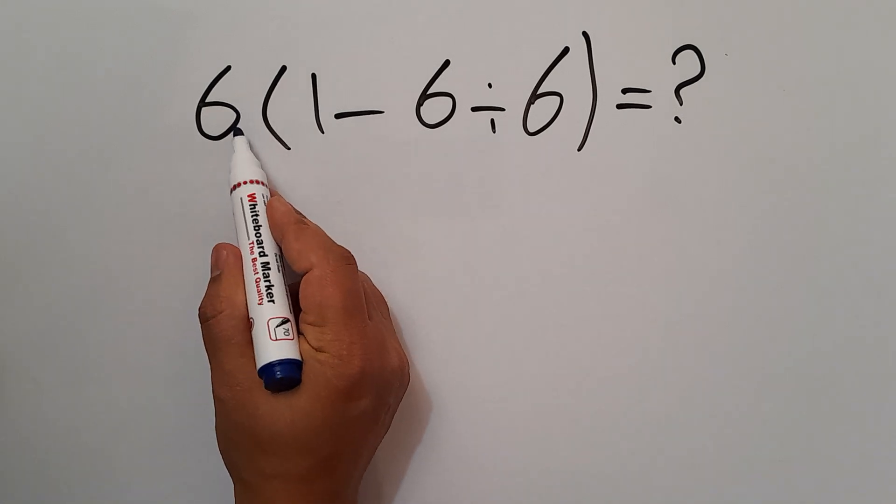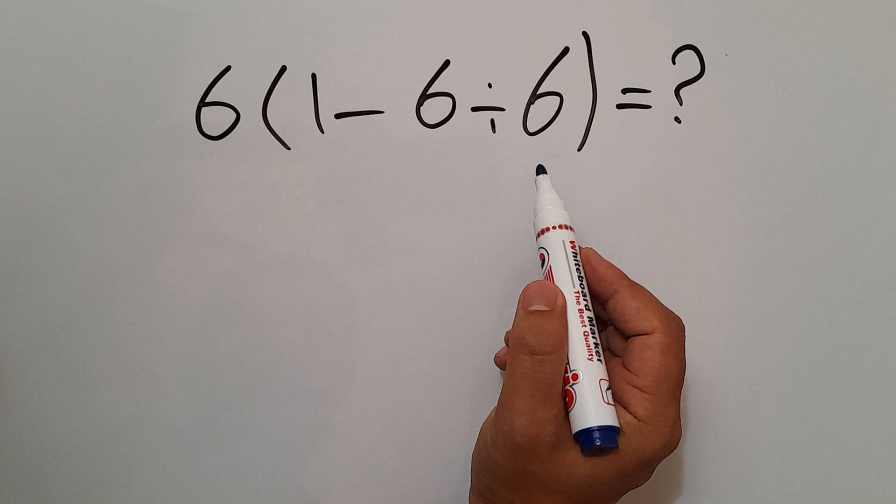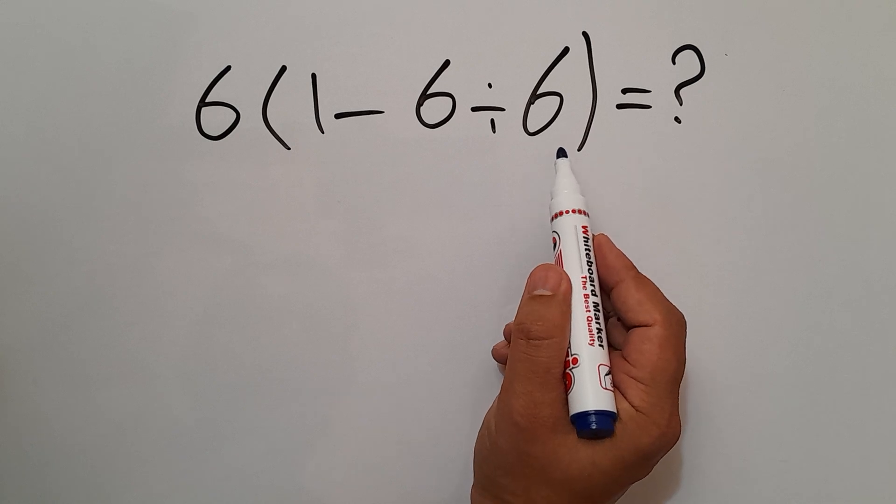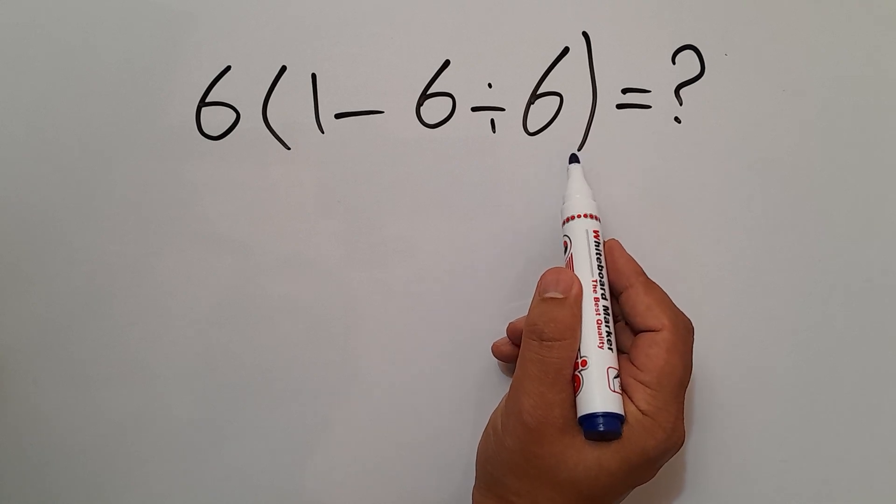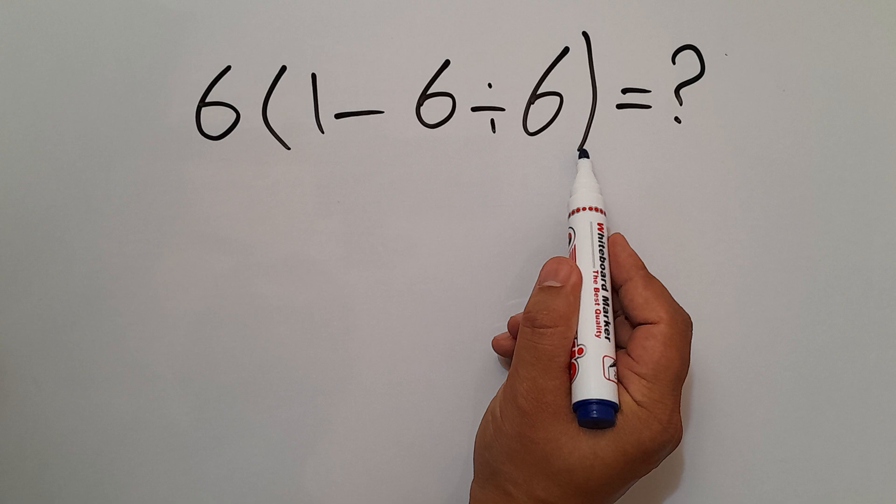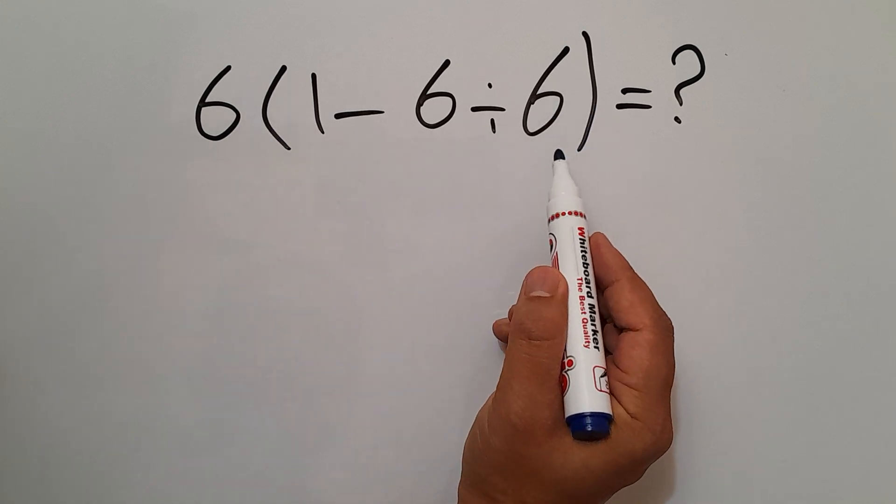we have one multiplication and one parentheses. As we know, parentheses has higher priority than other operations, so first we have to do these parentheses. And inside...